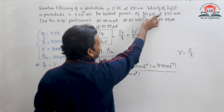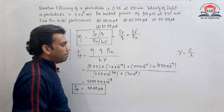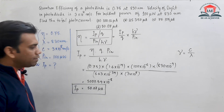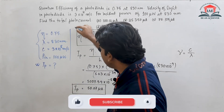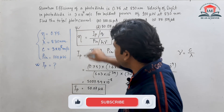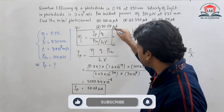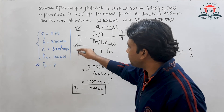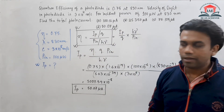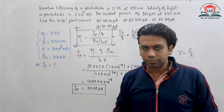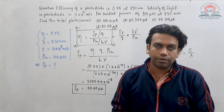So the photocurrent generated inside the photodiode for an incident power of 100 microwatt at 830 nanometer wavelength is 50.07 microampere. This formula of quantum efficiency is very important. Hopefully you enjoyed the numerical — thank you for watching.